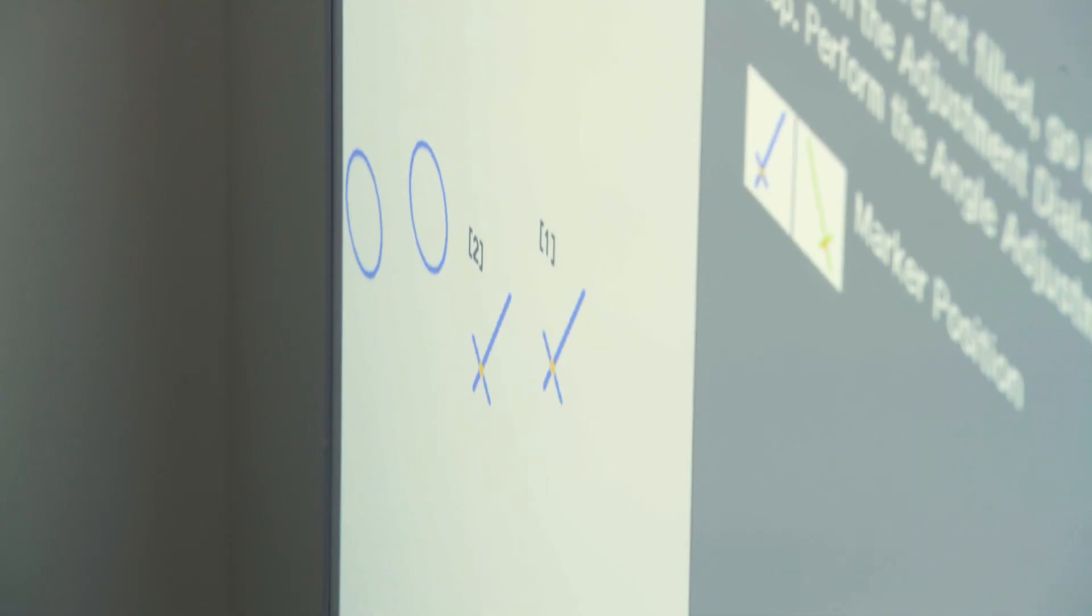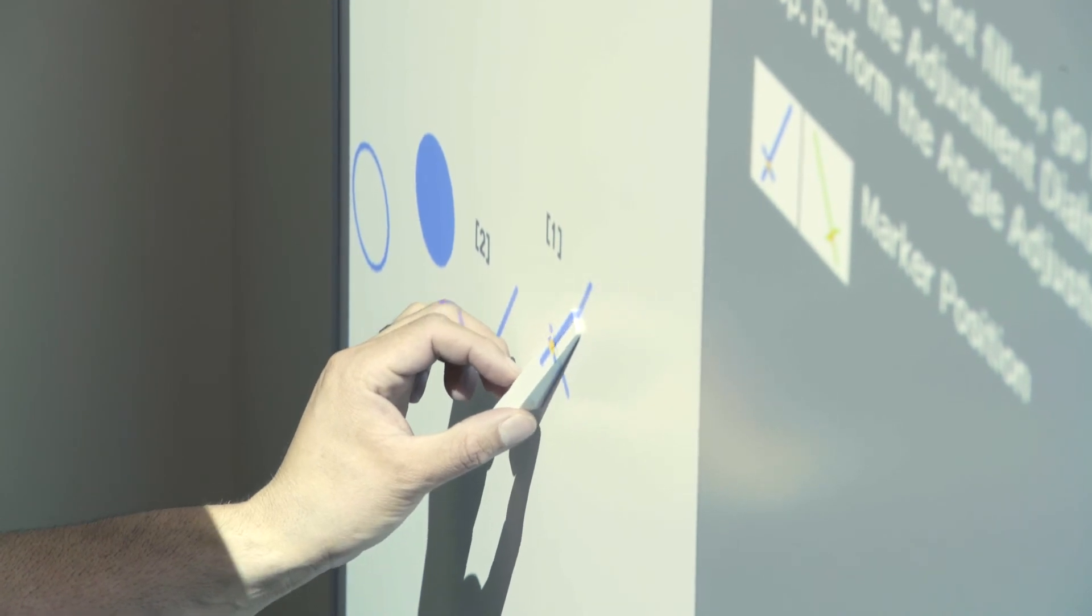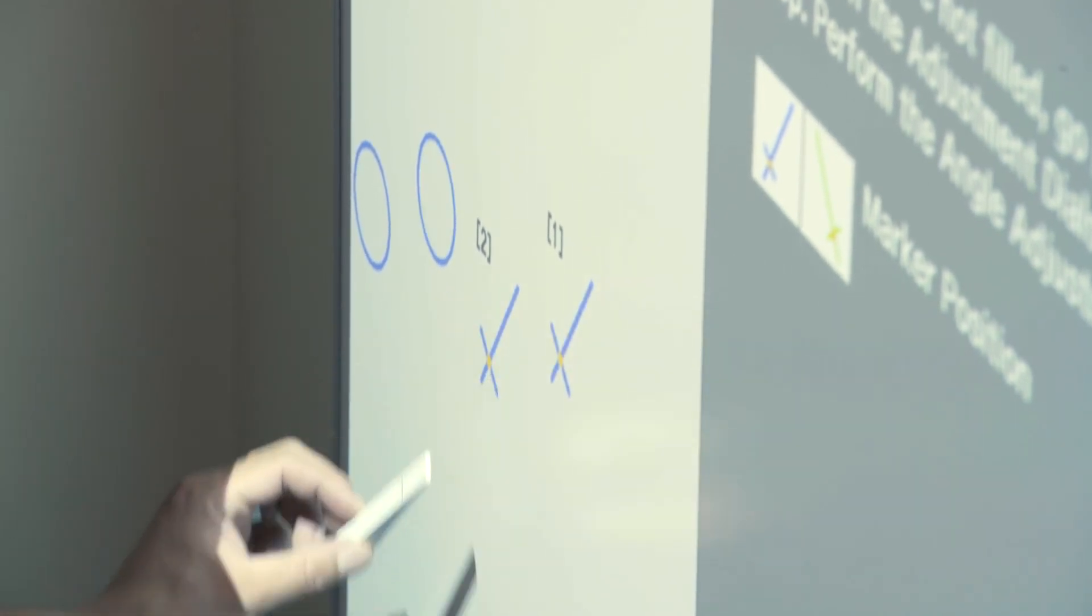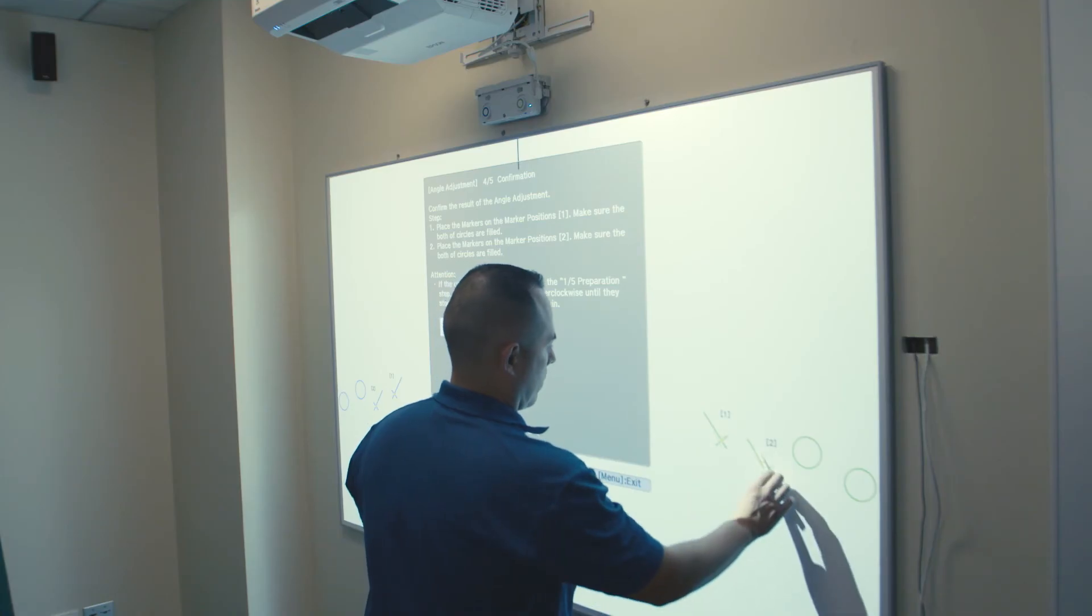Next, move the markers to the new locations shown on the board. The circles beside them will also turn solid when the markers are placed on the board. When all four locations have the filled circle, press Enter on the remote to go to the fifth step.